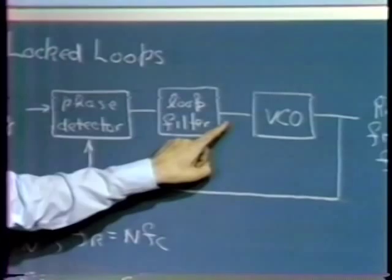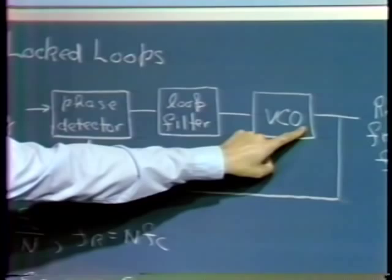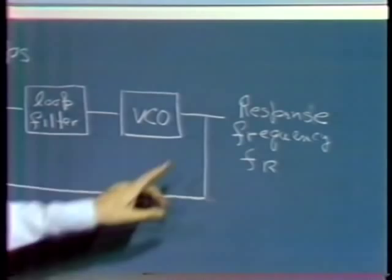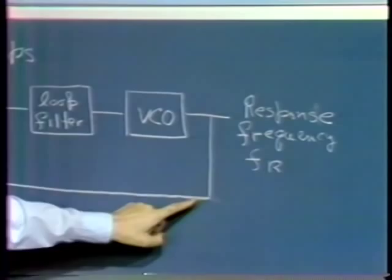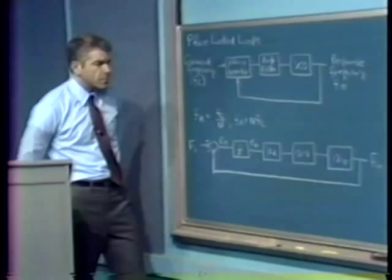The output signal from the loop filter is applied to a voltage-controlled oscillator, and the frequency out of this VCO depends on the signal applied at its input. That frequency is the response of the system — the thing we're interested in is the frequency of the output signal. The output signal is then fed back to form the second input to the phase detector, whose output is proportional, in some sense, to the difference in phase between its two inputs.